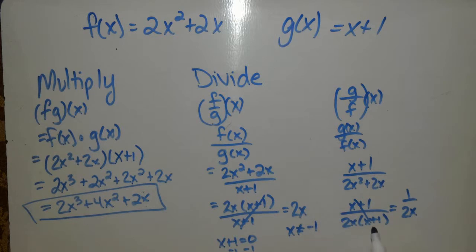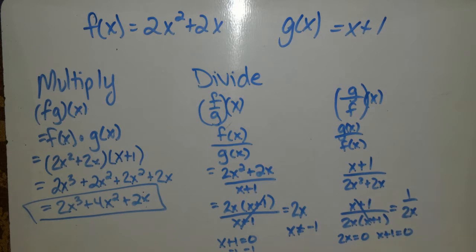so I want you to look at the factored form. You're going to set 2x equal to 0, and you're going to set x plus 1 equal to 0. This equals 0. This equals negative 1. So x cannot equal a 0 or a negative 1. That would be your answer.